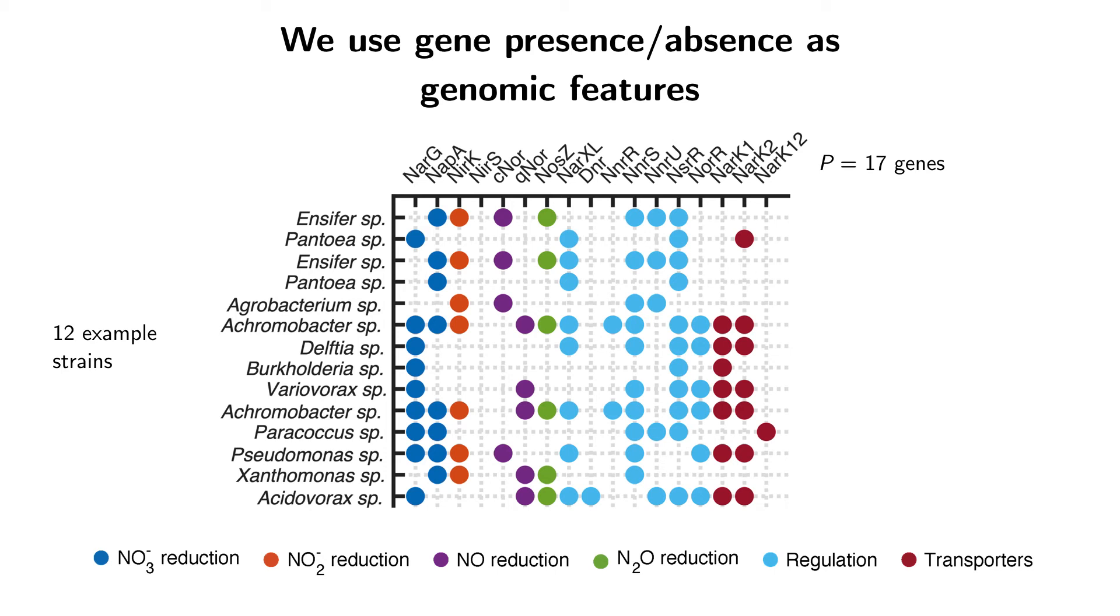This is a relatively coarse and low dimensional representation of the genomes of these organisms. But you can see that there is a substantial amount of variability from strain to strain in these genes.